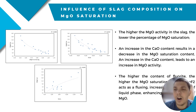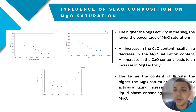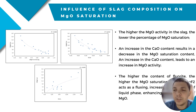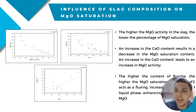Regarding the influence of slag composition on MgO saturation: according to the first graph, the higher the MgO activity in the slag, the lower the percentage of MgO saturation. The second graph shows that an increase in lime content results in a decrease in MgO saturation content, while an increase in lime content leads to an increase in MgO activity. The third graph shows that the higher the content of fluoride, the higher the MgO saturation content, because fluoride acts as a flux, increasing the amount of liquid phase and enhancing the dissolution of MgO.